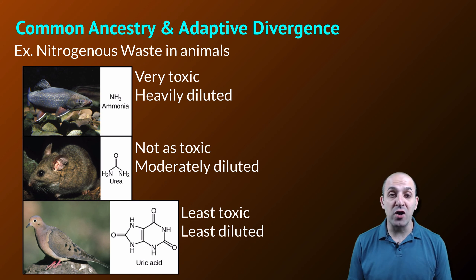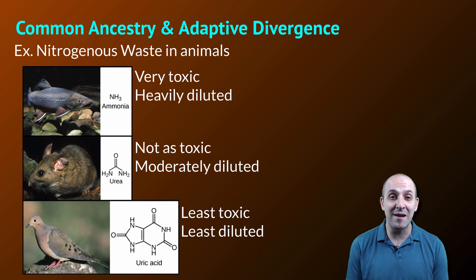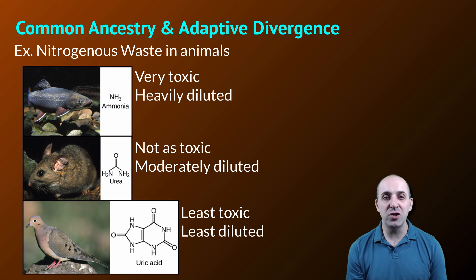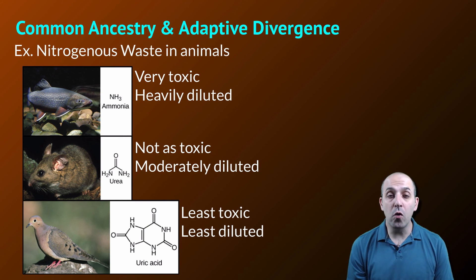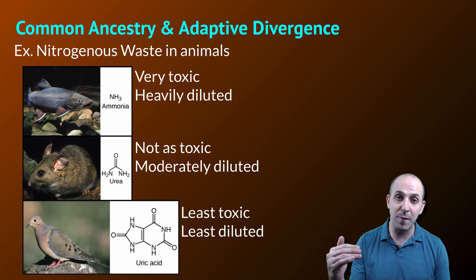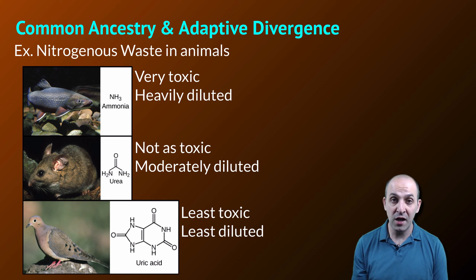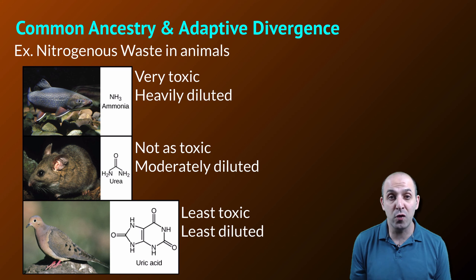An even more water-conserving nitrogenous waste strategy is found in birds and reptiles: the production of uric acid, which is the least toxic nitrogenous waste and therefore needs to be diluted the least — advantageous for organisms with particularly limited access to water. The trade-off as we move down this system is the amount of energy spent in metabolism to convert nitrogenous waste from the breakdown of proteins and amino acids into an acceptable form. Ammonia requires very little conversion and energy; urea requires more; and uric acid requires the most energy to produce. As always with evolution, we see both benefits to a particular strategy and trade-offs dictated by the requirements of the environment.